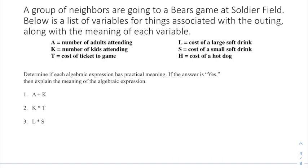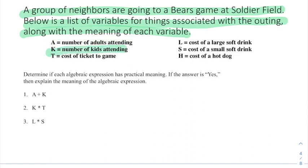We're going to go through several problems based on one situation. A group of neighbors are going to a Bears game at Soldier Field. Below is a list of variables: A represents the number of adults attending, K represents the number of kids attending, T represents the cost of a ticket, L represents the cost of a large soft drink, S represents the cost of a small soft drink, and H represents the cost of a hot dog.